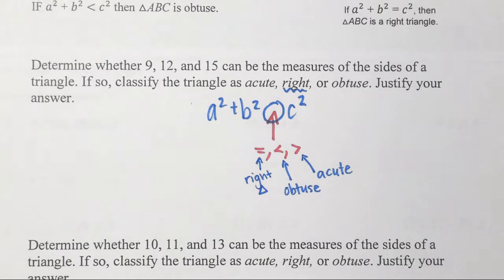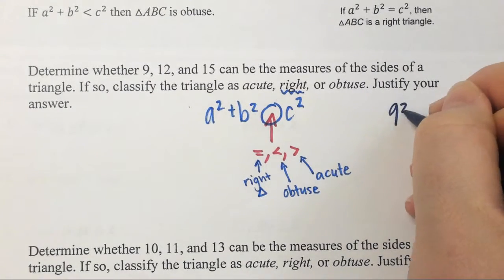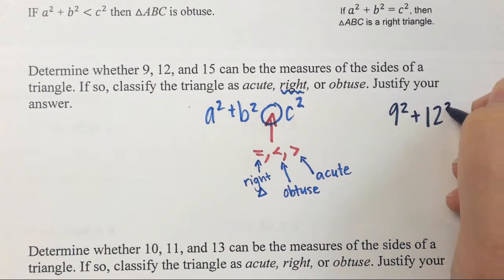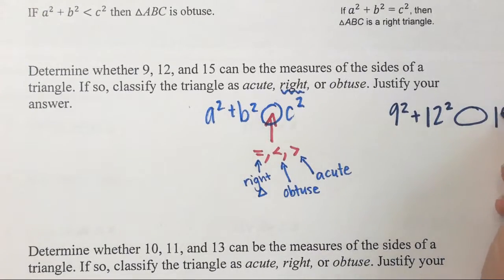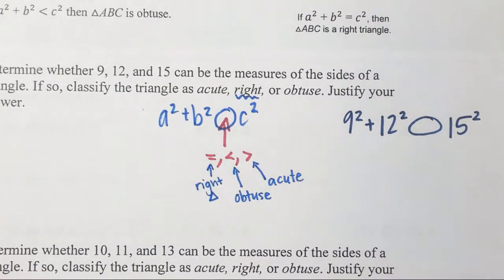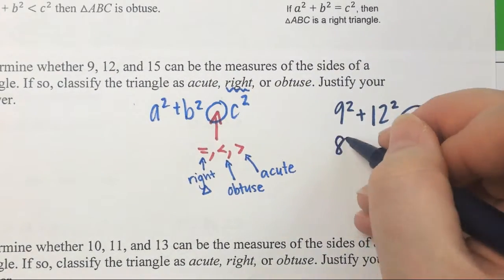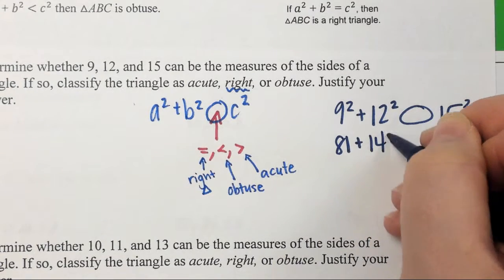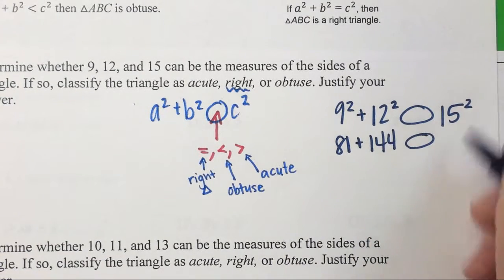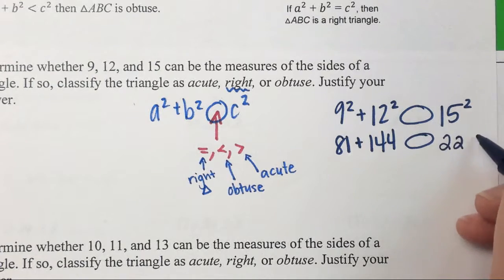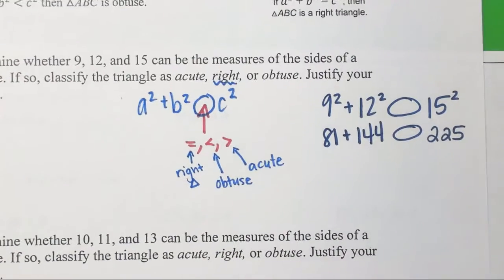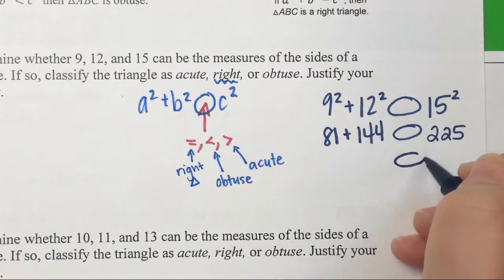And if that made no sense to you, I swear it will after a couple problems. I'm not going to put an equal to sign. I'm just going to put a circle for now. So, 9 squared plus 12 squared. I'm going to put a circle and then 15 squared. 9 squared is 81. 12 squared is 144. Again, my circle, 15 squared and that's 225. I don't know what 144 plus 81 is.